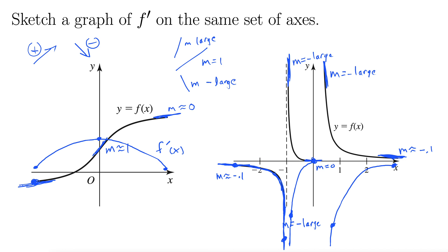Of course, we do have functions where the derivative of the function is the function itself — for instance, e to the x. So anything that looks exponential-ish will have that property, where the derivative resembles the original function.